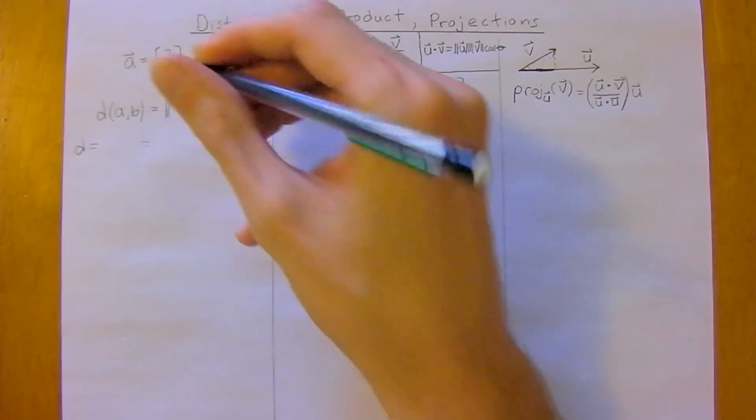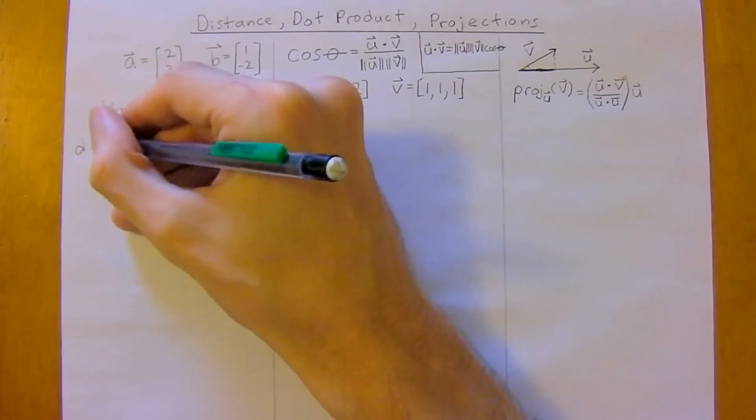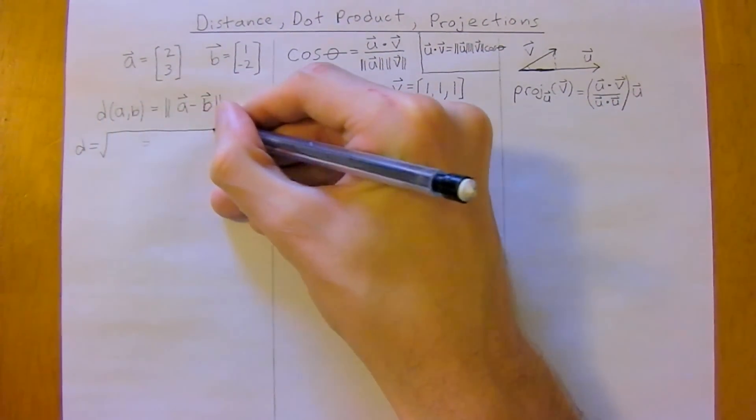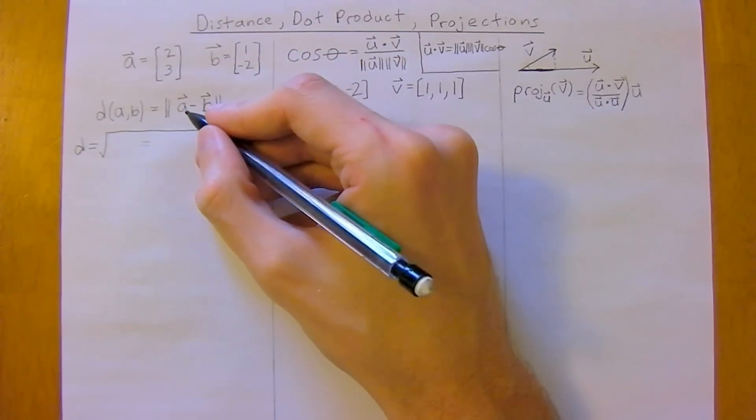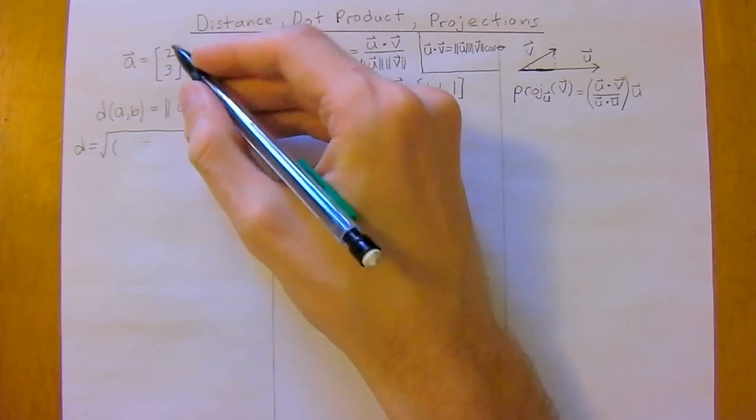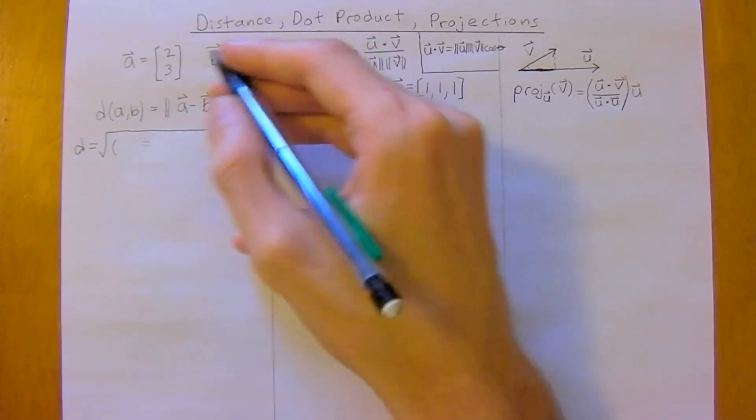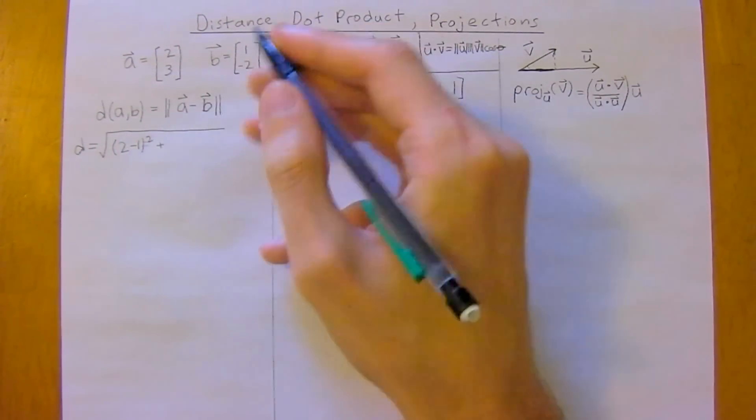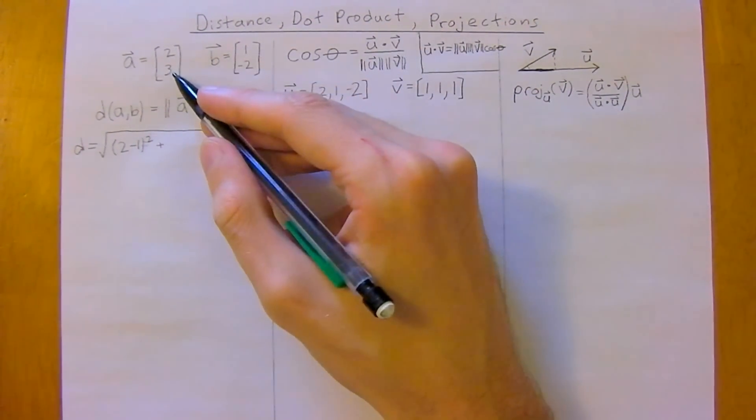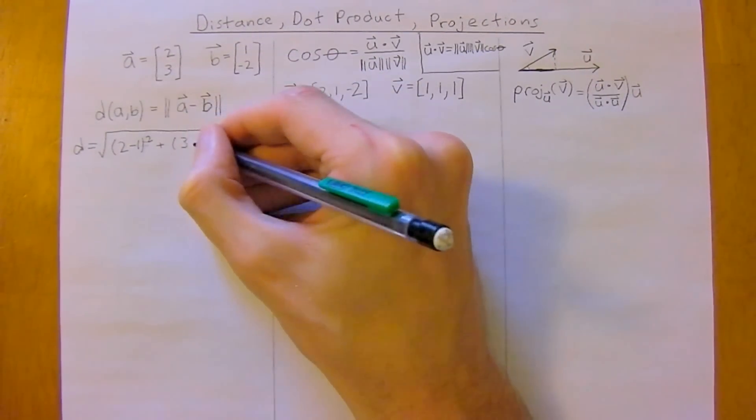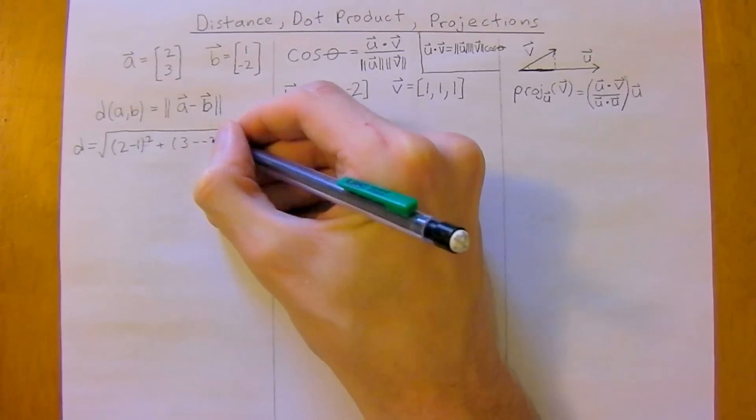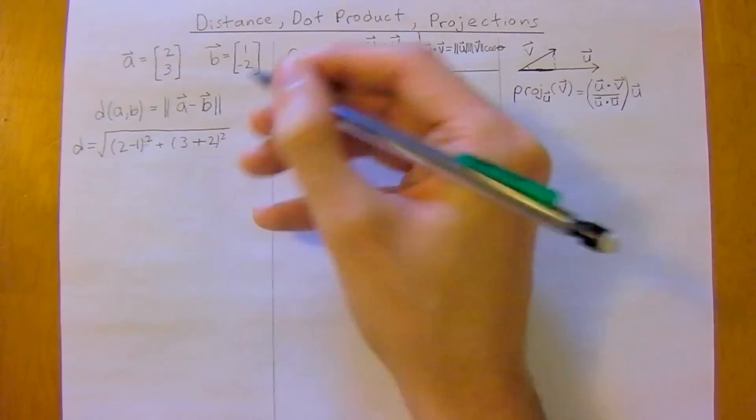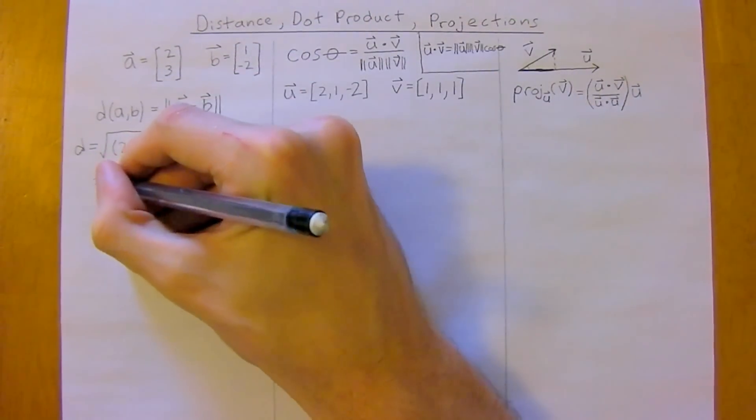Well, so distance, and this just comes straight out of the Pythagoras theorem, so it's just going to be the square root of the components, so 2 minus 1, so the x components first, 2 minus 1 squared, plus the y components now, so 3 minus minus 2, or you could write that as just 3 plus 2 squared, and pretty straightforward calculations.